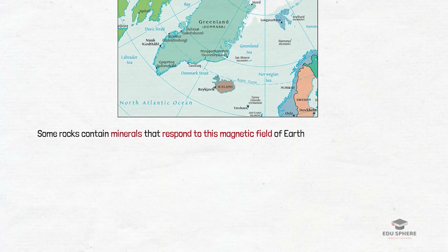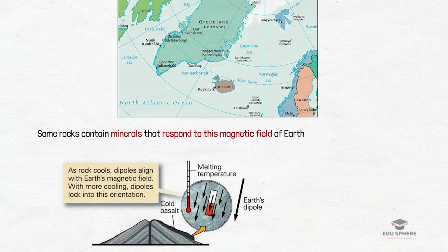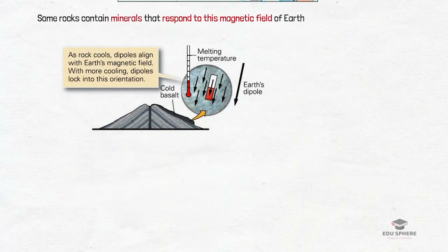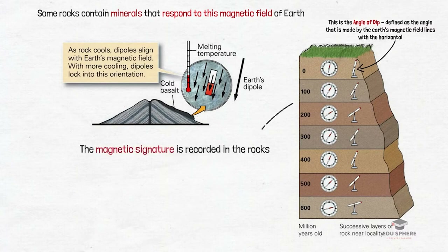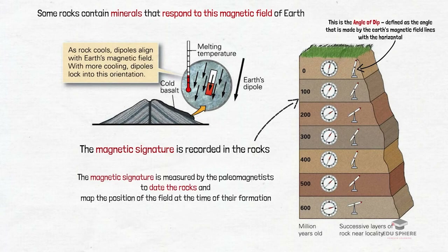Some rocks and materials contain minerals that respond to the earth's magnetic field. When rocks are formed, the minerals align with the magnetic field, preserving its position — this is called rock magnetism. The magnetic signature of the rocks allows paleomagnetists to date rocks and map the position of the field at the time of their formation. This study of magnetic rocks and sediments to record the history of the magnetic field is known as paleomagnetism.